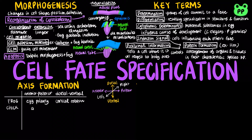In chick embryo, gravity determines the anterior-posterior axis, whereas pH differences determine the dorsal-ventral axis. In insects such as fruit flies, the proteins bicoid and nanos determine the anterior-posterior axis, and the BMP4 gene determines the dorsal-ventral axis.